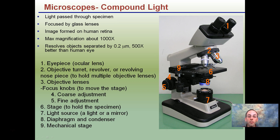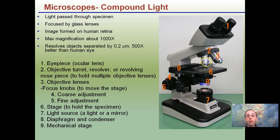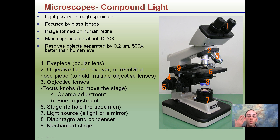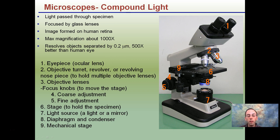Starting with the first one, the compound light microscope. This is the one you're probably most familiar with. It looks very similar to this — there might be some variations depending on the manufacturer. There's a light source at the bottom and ocular lenses. It's basically using magnification with light. These are focused glass lenses and the image is really being formed in the back of your eye as you look through. It resolves images about 500 times better than what the human eye can see.